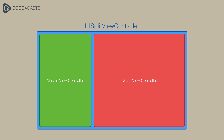A UISplitViewController instance, for example, presents a master view controller on the left and a detail view controller on the right. If the user taps an item in the master view controller, the item's details are shown in the detail view controller. The master and detail view controllers are both child view controllers of the split view controller. The Mail application on iPad is a very good example of this.